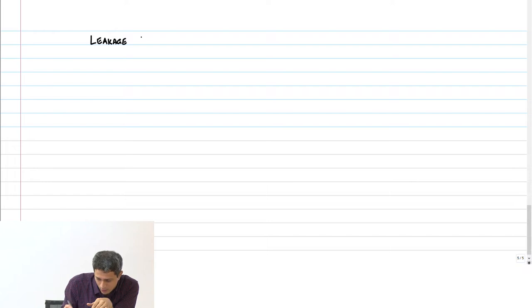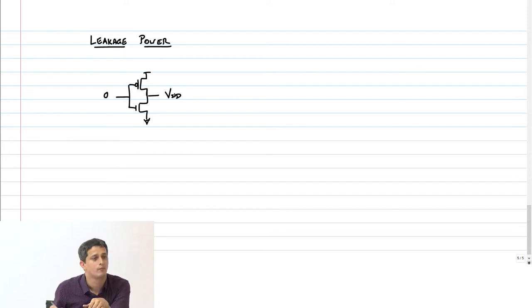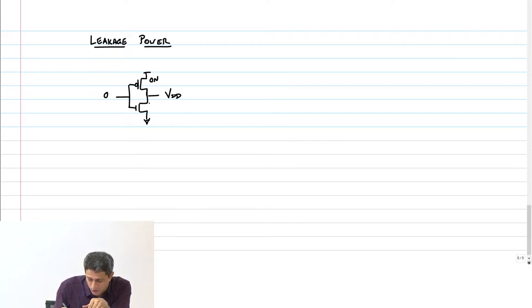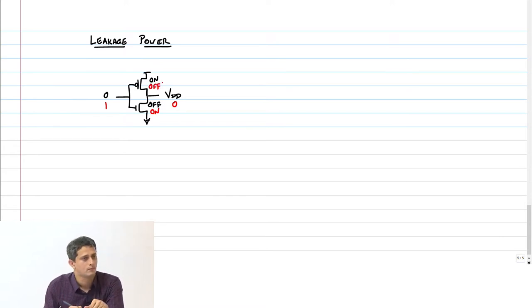This is the leakage power. If my input is 0, output is VDD, in which case the NMOS is on and PMOS is off. On the other hand, if my input is 1, output will be 0 — the NMOS will be on and PMOS will be off.